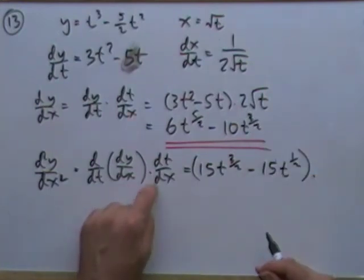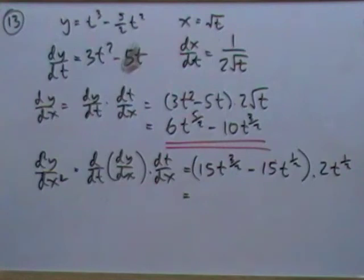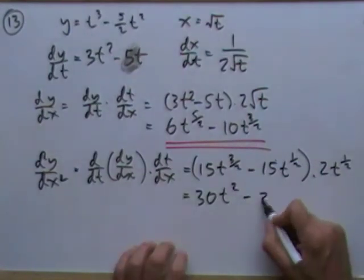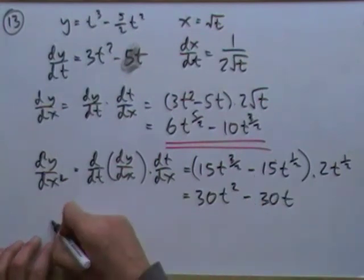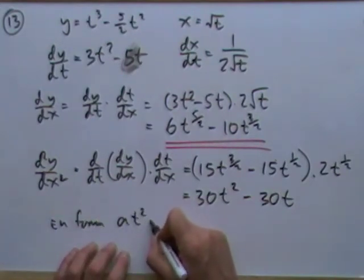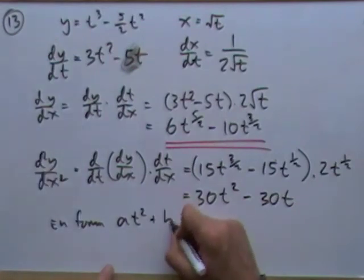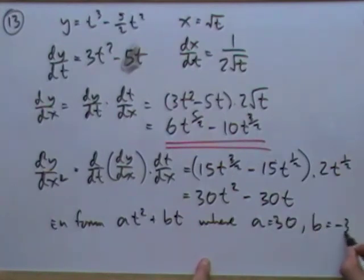Multiplying out: 15t^(3/2) × 2t^(1/2) = 30t², and -15t^(1/2) × 2t^(1/2) = -30t. So d²y/dx² = 30t² - 30t, which is in the form at² + bt where a = 30 and b = -30.